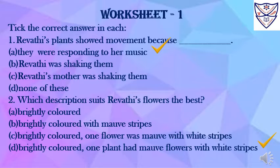Second, which description suits Revati's flowers the best? A. Brightly colored. B. Brightly colored with mauve strips. C. Brightly colored, one flower was mauve with white strips. D. Brightly colored, one plant had mauve flowers with white strips. And the answer is D — brightly colored, one plant had mauve flowers with white strips.